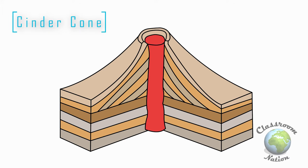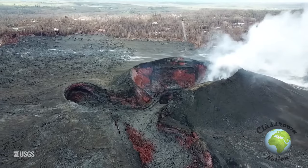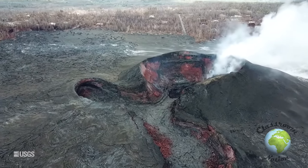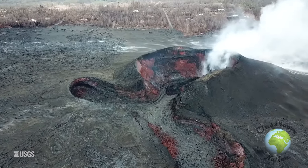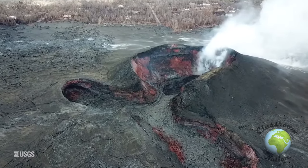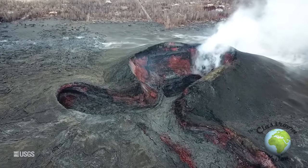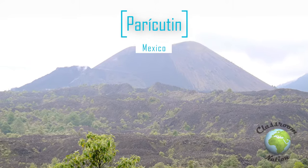The first type of volcano we shall look at is cinder cone. This is one of the most common types of volcano and it is less dangerous compared to the other types. Cinder cones only grow to about 1,000 to 1,200 feet tall and are usually created from a single eruption. When lava erupts, magma is thrown into the air which cools into cinders. These fragmented cinders fall short distances from the opening, thus creating a cone. A classic example of this is the Paricutín in Mexico.